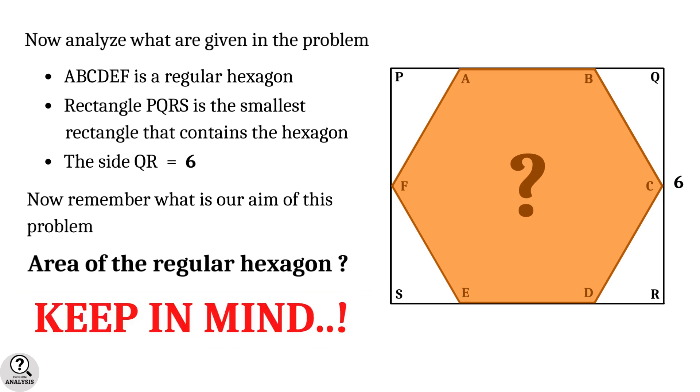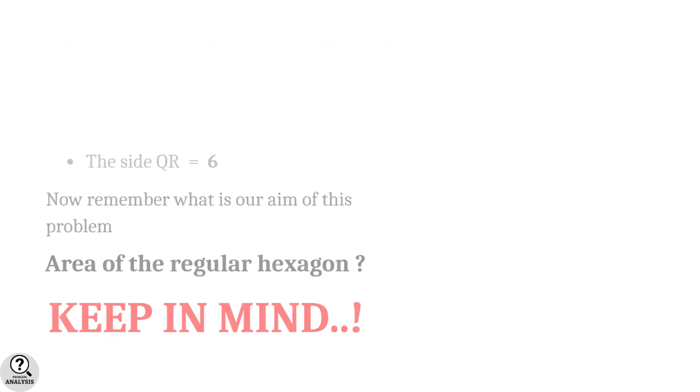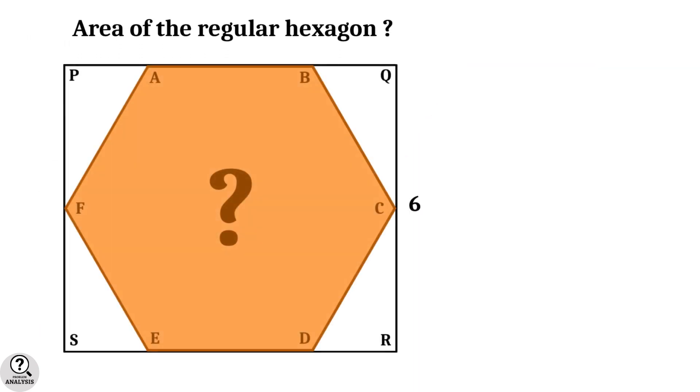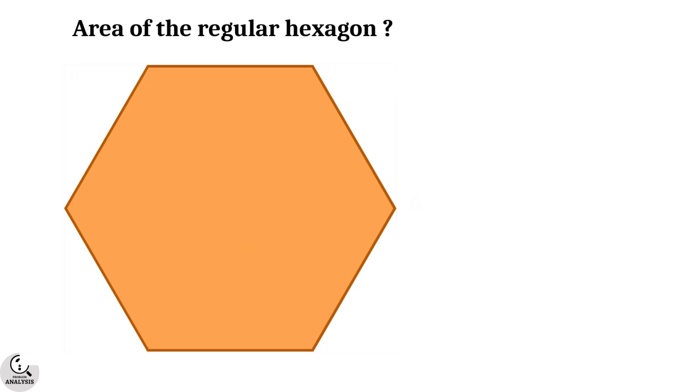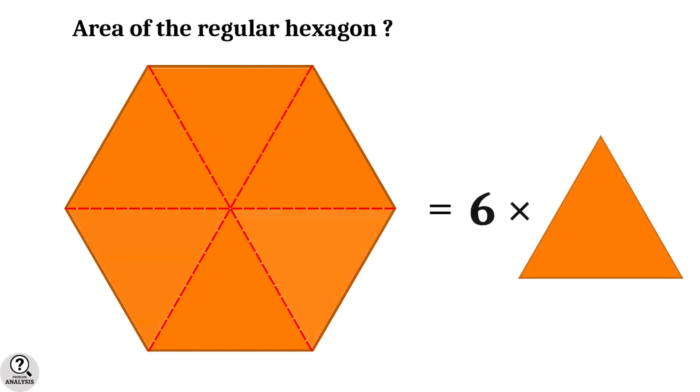Now think about what are the possible ways to find out the required area. Observe the hexagon. Since it is a regular hexagon, we can divide it into six congruent equilateral triangles. Therefore, if we can find the area of one such triangle, then multiplying by six we will get the desired area. Let's proceed in that way.